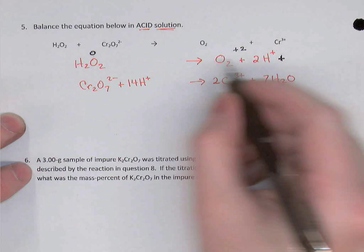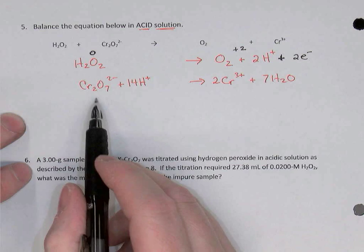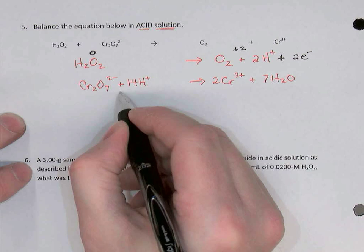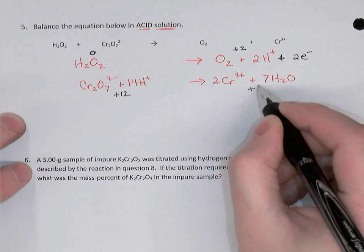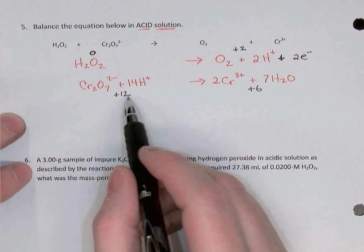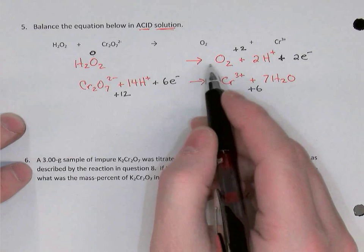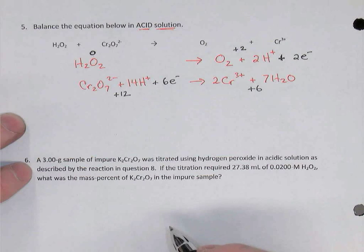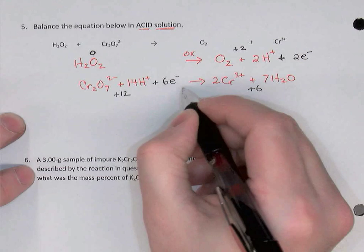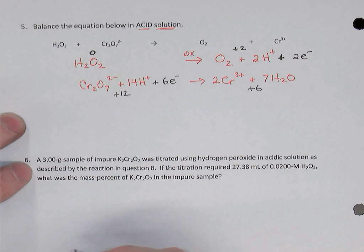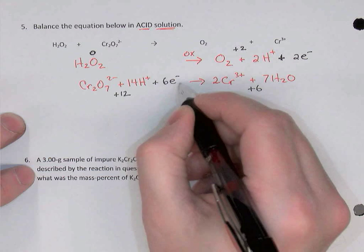In the second equation, we have a dichromate at minus two and 14 positives from the hydrogen ions — giving plus twelve on the left. On the right, two chromium-3s give plus six, and waters are neutral — so plus six. The left is more positive, and the difference is six, so we add six electrons to the left-hand side. Since electrons are on the product side in the first reaction, it's oxidation. Electrons on the left in the second reaction means it's a reduction.